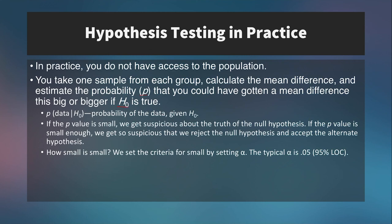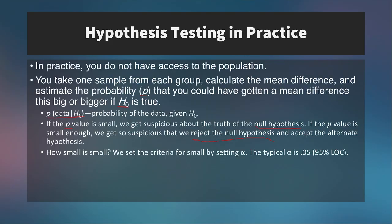If the p-value is very small, we start to get suspicious about the truth of the null hypothesis. If the p-value is small enough, we reject the null hypothesis and therefore accept the alternative hypothesis. Usually we set the alpha level to 0.05 — we set the probability of error to 0.05, which leaves us with a 95% confidence interval.